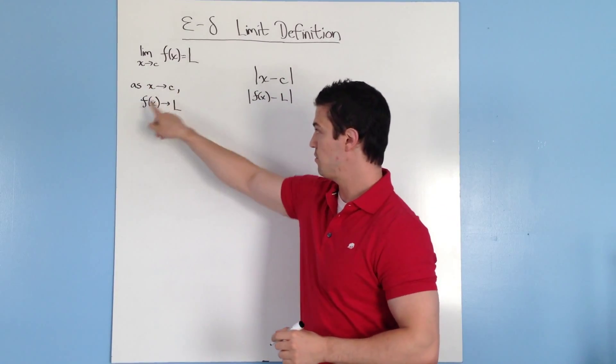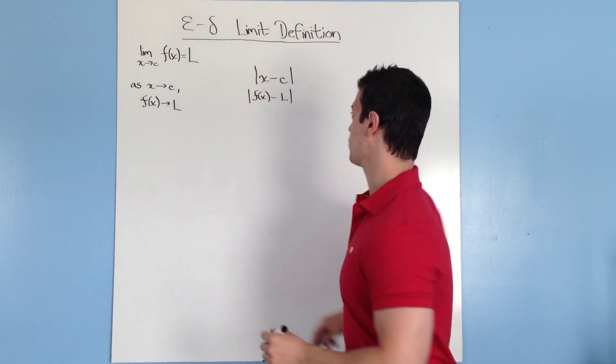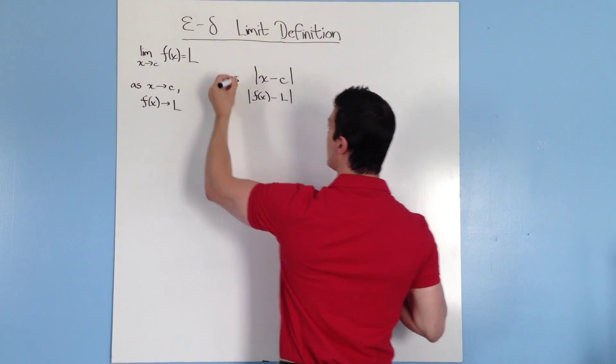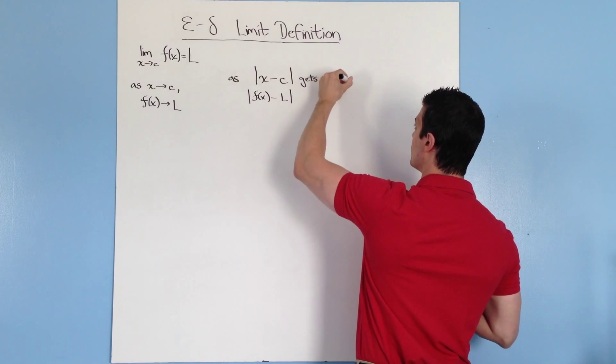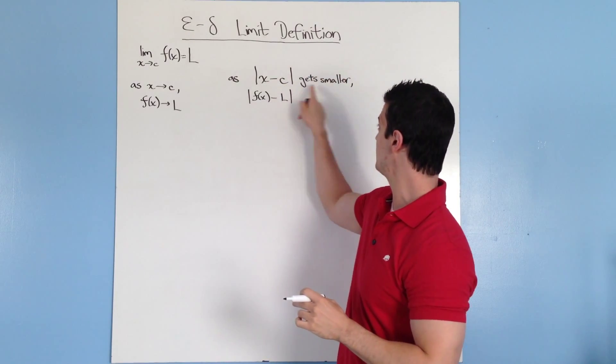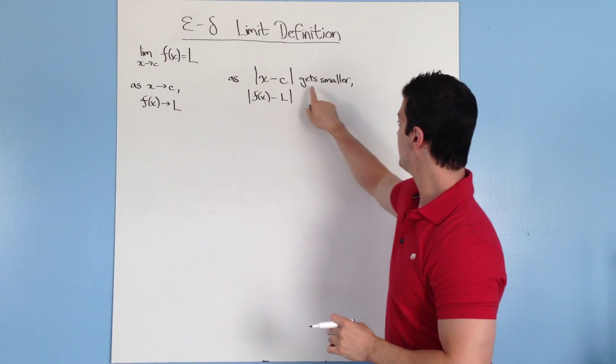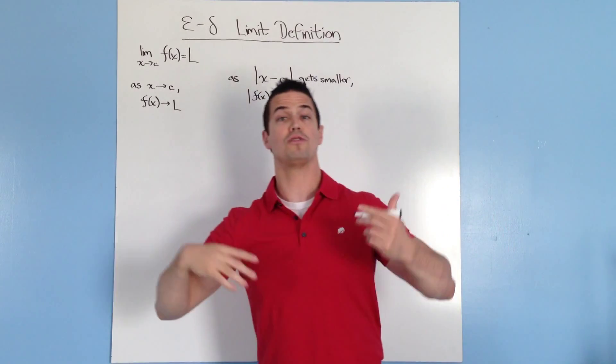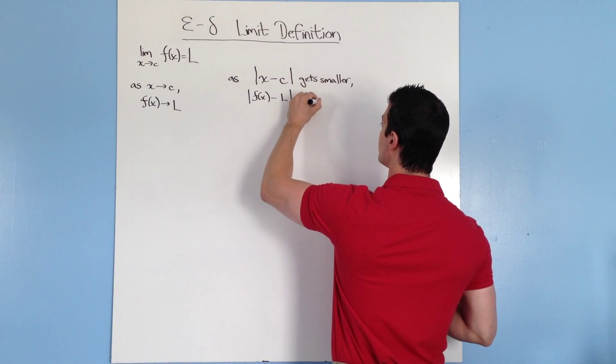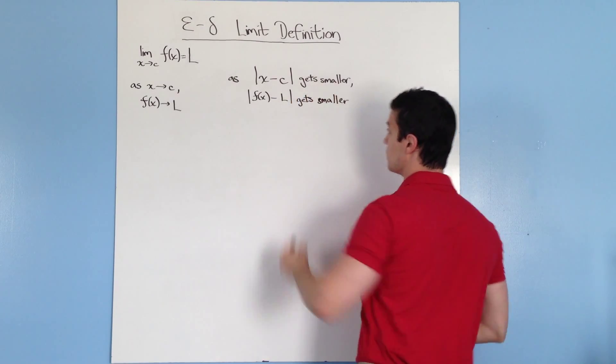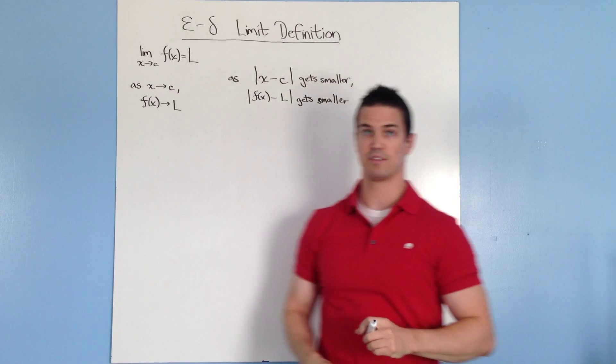So based on this right here, as x gets closer to c and f of x gets closer to l, I'm going to do the same thing over here, only since I changed the notation here, I have to add some words. So basically, I'm going to write, as the absolute value of x minus c gets smaller, that means they're getting closer together. If x minus c is getting smaller, that means these values are getting closer and closer to the same value. So as x minus c gets smaller, then f of x minus l should also get smaller. So this is just the same thing written over here, only I'm just making it a little bit more mathy, where I'm subtracting them, and the value is getting smaller.